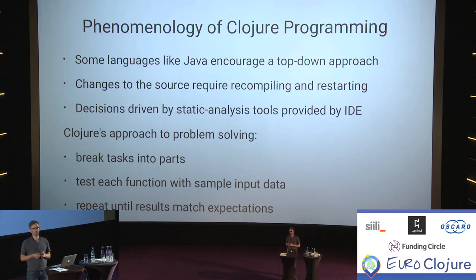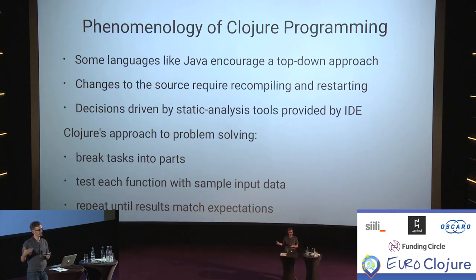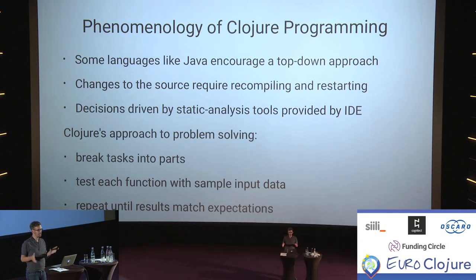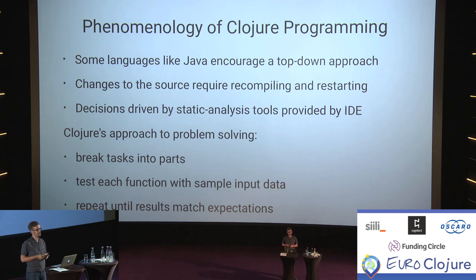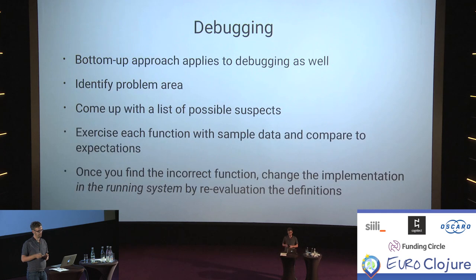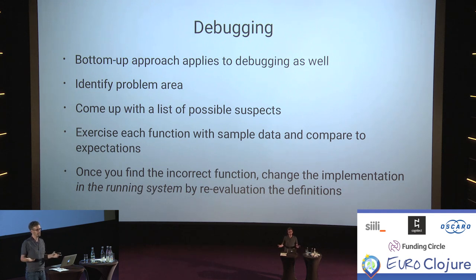Here's what Clojure programmers usually do: they take a task, break it into different parts, and write functions for each of those parts. Then they try to exercise those functions with sample input, test if the results match expectations, and if they don't, they repeat the process. Clojure encourages a more bottom-up approach to programming.